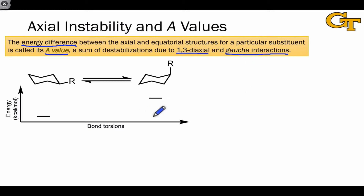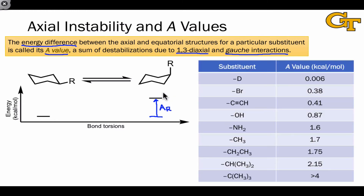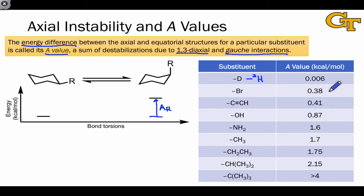On a conformational coordinate diagram, the A-value is the energy difference from the equatorial conformer to the axial conformer. This table gives us a sense of typical A-values for different types of substituents. Deuterium, an isotope of hydrogen with one neutron and one proton, has an extremely tiny A-value of six thousandths of a kilocalorie per mole, which makes sense because it's basically hydrogen. Moving to single-atom substituents like the halogens causes the A-value to increase, but not by much — only about half a kilocalorie per mole. The group with the carbon-carbon triple bond has a lot to teach us about the origin of the A-value.